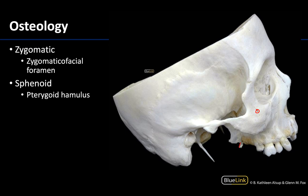One other thing you can see here is this inferior projection which I'm outlining — this is the pterygoid hamulus. This is a projection of the medial pterygoid plate; what you're seeing right here is the lateral pterygoid plate. The tendon of the tensor veli palatini is going to be located running along the hamulus, and the hamulus also serves as a superior attachment of the pterygomandibular raphe.